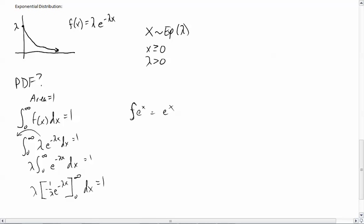If x is infinity, that means that this becomes essentially 0. If I put infinity, this becomes e to the negative infinity, which is essentially 0. 0 times negative 1 over lambda is 0. And then I go minus, and if I put 0 in here, then it will be e to the 0, and e to the 0 is 1. 1 times negative 1 over lambda is negative 1 over lambda.